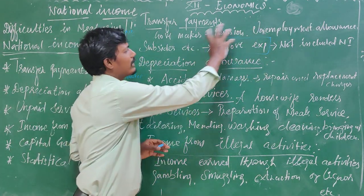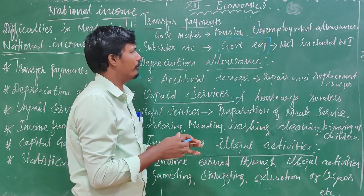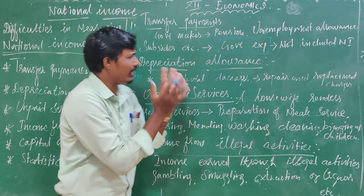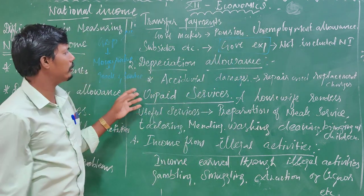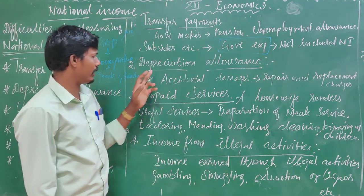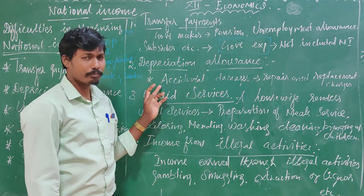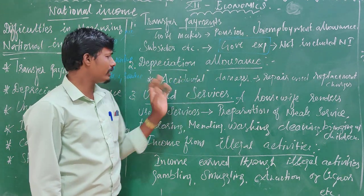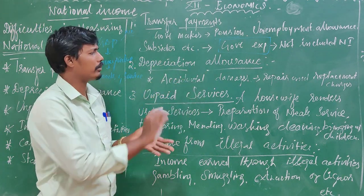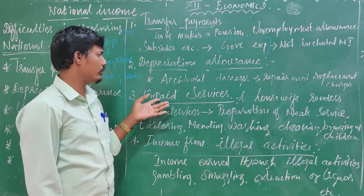Unemployment allowance is a problem in measuring national income. Second: depreciation allowance. Depreciation means repair and replacement cost of capital goods.